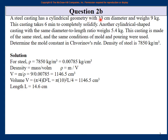So the first casting has diameter = 10 cm and length = 14.6 cm. For the second casting, the diameter-to-length ratio is the same, so d/l = 10/14.6 applies to the second casting as well.